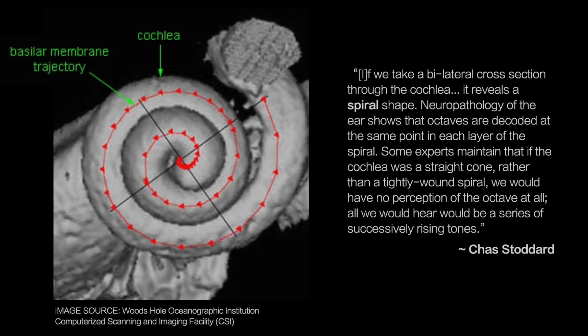According to Chas Stoddard, the octave has its own receptor in the human body. He writes: if we take a bilateral cross section through the cochlea, it reveals a spiral shape. Neuropathology of the ear shows that octaves are decoded at the same point in each layer of the spiral. Some experts maintain that if the cochlea was a straight cone rather than a tightly wound spiral, we would have no perception of the octave at all. All we would hear would be a series of successively rising tones.